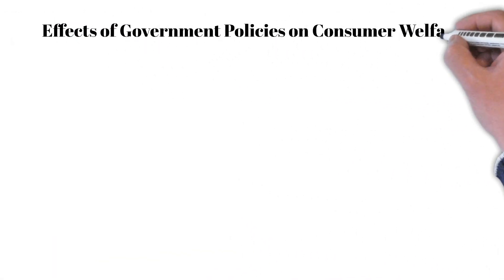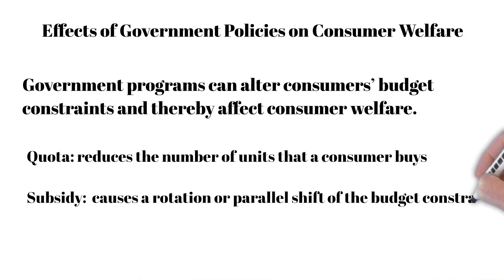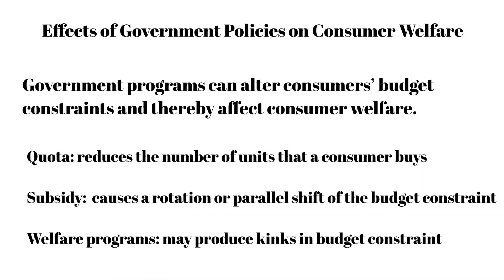Government programs can change the consumer's budget constraints and affect consumer welfare. A quota reduces the number of units that a consumer buys, changing the budget line. A subsidy causes a rotation or parallel shift of the budget constraint line. Welfare programs may produce kinks in the budget constraint.